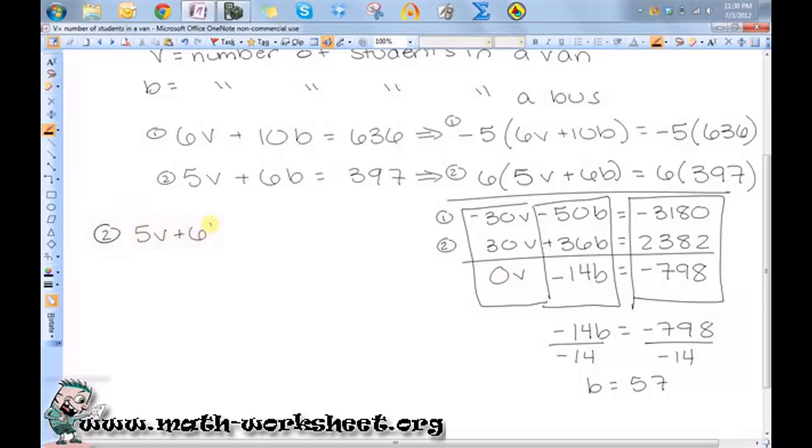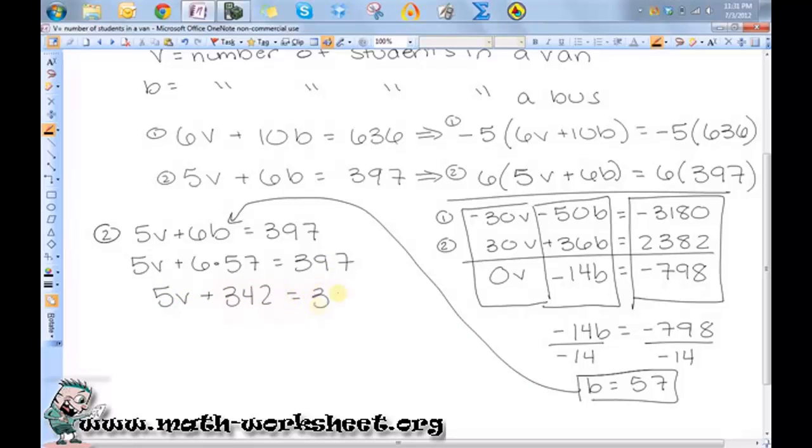Okay, so let's just use the second equation. 5v + 6b = 397. And I'm just going to substitute this b in there. So I have 5v + 6(57) = 397. So 5v + 342 = 397.